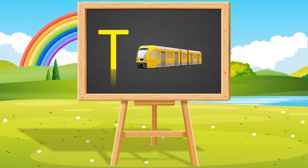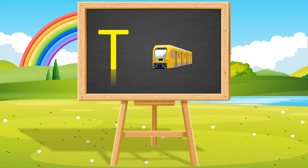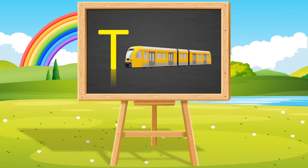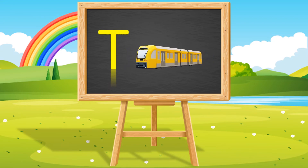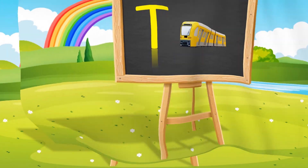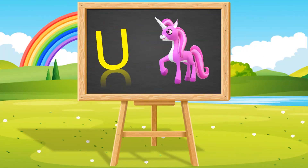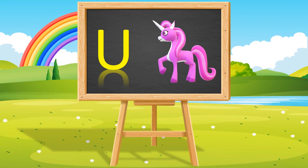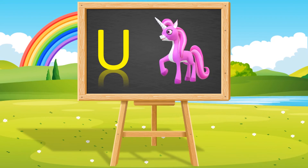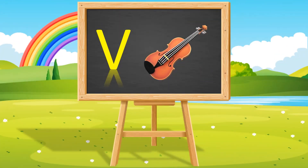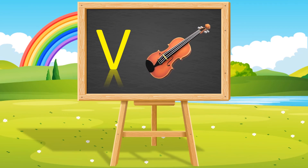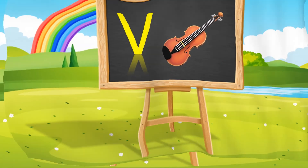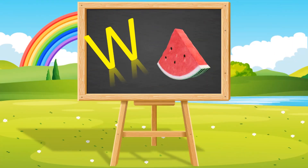T for train. U for unicorn. V for violin.